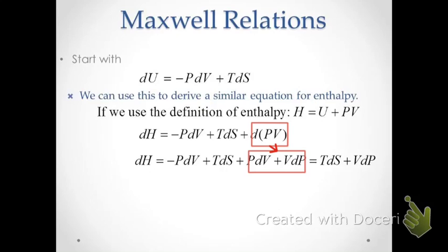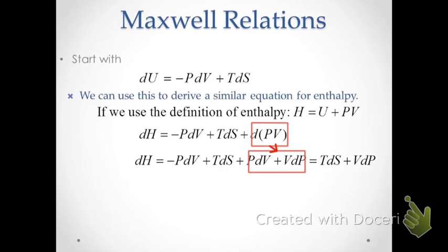If we expand D(PV), we get PDV plus VDP. And if we look carefully, we'll note that the PDV terms cancel out, and we're left with a two-term relationship: DH is equal to TDS plus VDP.